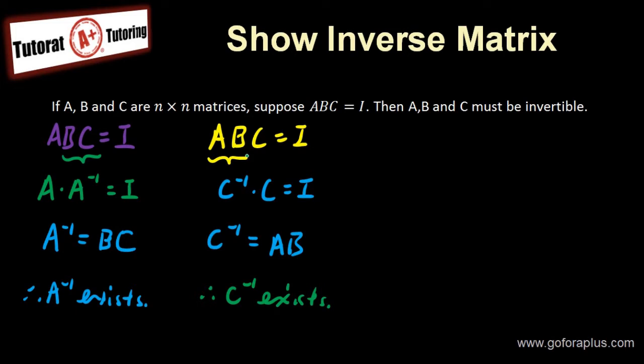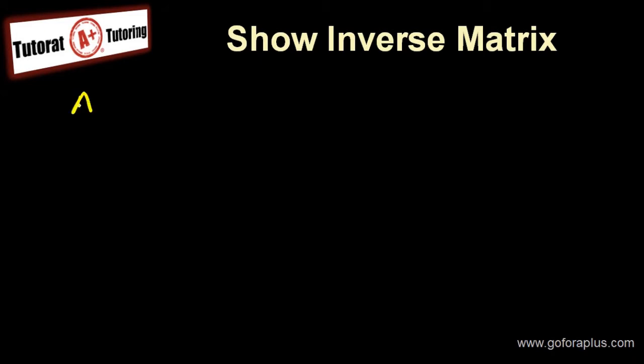Now how about B? B is a little bit more complicated. Let me do it on the next page. So I have ABC equals to I. If I multiply A inverse on both sides, so A inverse ABC equals to A inverse I. The order matters a lot in matrix multiplication. So don't mess up the order. If you multiply the A inverse in the front, you have to multiply in the front on the right side as well.